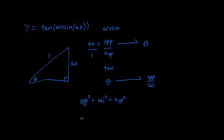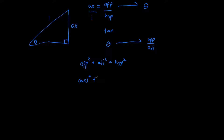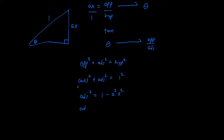The opposite side equals AX, so we have AX squared plus adjacent squared equals 1 squared. AX squared is equal to A squared X squared. Subtracting from both sides, adjacent squared equals 1 minus A squared X squared. Taking the square root of both sides, adjacent equals the square root of 1 minus A squared X squared.